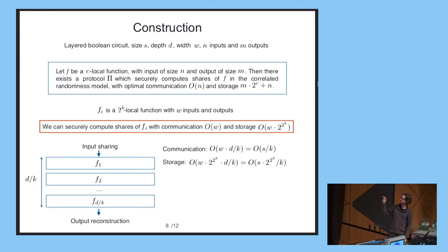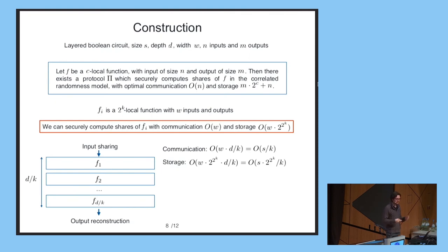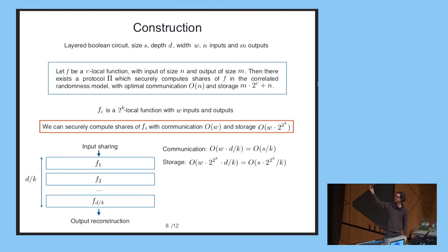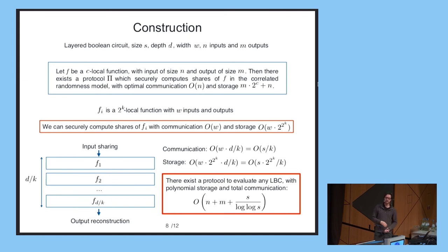The total communication is the width w times d/k. Since w times d is essentially the circuit size S, we end up with a protocol whose total communication is S/k. The storage requirement is w times 2^(2^k) times d/k, which is essentially S times 2^(2^k) divided by k. By setting k to be log log S, you obtain the claimed result: any layered Boolean circuit can be securely evaluated with a polynomial amount of storage and total communication proportional to S over log log S.